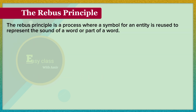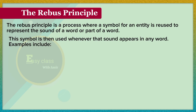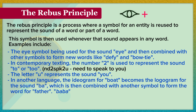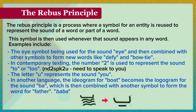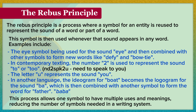The Rebus Principle. The rebus principle is a process where a symbol for an entity is reused to represent the sound of a word or part of a word. This symbol is then used whenever that sound appears in any word. Examples include the 'i' symbol being used for the sound 'i' and combined with other symbols to form new words like defy and boutique. In texting, the number 2 is used to represent the sound 'to' or 'too', and the letter U represents the sound 'you'. The ideogram for boat becomes the logogram for the sound 'b', combined with another symbol to form the word for father. This process allows one symbol to have multiple uses, reducing the number of symbols needed in a writing system.